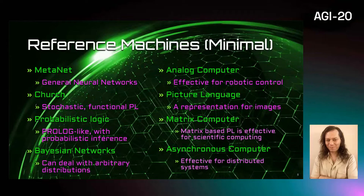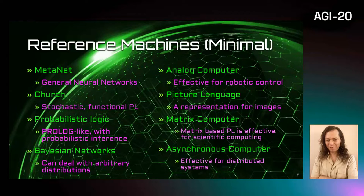MetaNet is a general neural network representation that can produce common deep learning models, and it is a typed network representation with a large set of neural operations, intended to be differentiable. Church is a stochastic extension scheme and it is a glue language of the CSM by which the CSM's internal functions are reflected. Probabilistic logic is used to provide common-sense reasoning capability. Bayesian networks are used to represent statistical models.